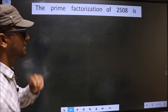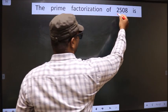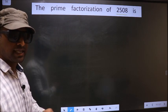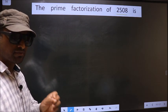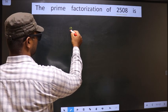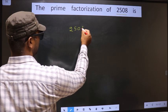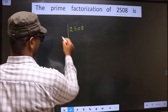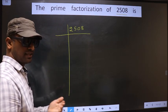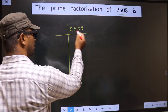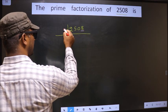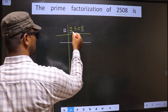The prime factorization of 2508. To do prime factorization, first we should frame it in this way — that is 2508. For this number, the last digit is 8 which is even, so we take 2 here. The first number is 2.